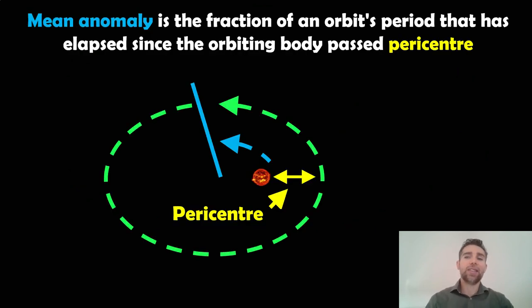So now that we've got that, the mean anomaly then is the fraction of an object's orbital period that has elapsed since the orbiting body has essentially passed that pericentre. So once it's passed the pericentre, then the mean anomaly is essentially the fraction of that orbit, but it's the orbital period that has elapsed since the pericentre essentially.